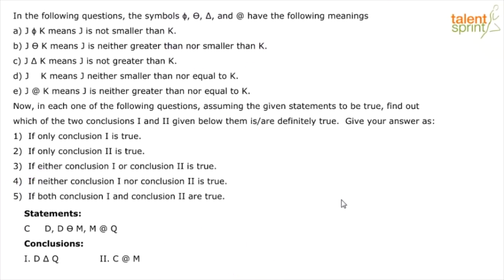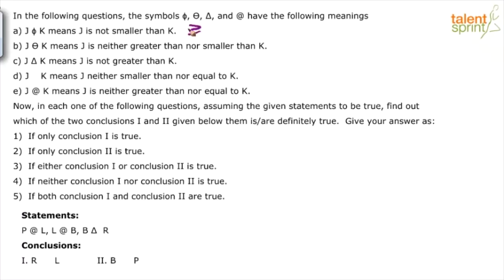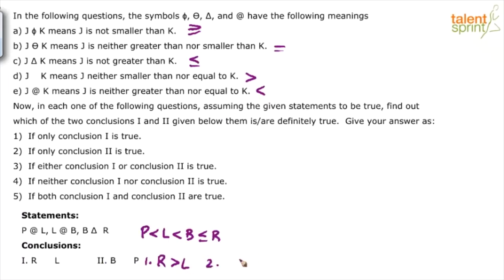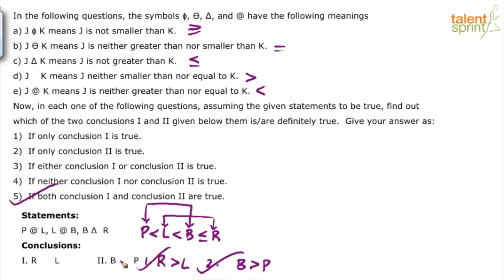Look at the next one. Statements: p at-the-rate l means p less than l; l at-the-rate b means l less than b; and b delta r means b less than or equal to r. First conclusion: r space l means r greater than l. Comparing r with l: r is greater than or equal to b, and b is greater than l — the common inequality is greater, so r greater than l. First conclusion is correct. Second conclusion: b space p means b greater than p. Comparing b with p: b is greater than l and l is greater than p, so b is greater than p. Second conclusion is also true. So your answer should be option 5 — both conclusion 1 and 2 are true.